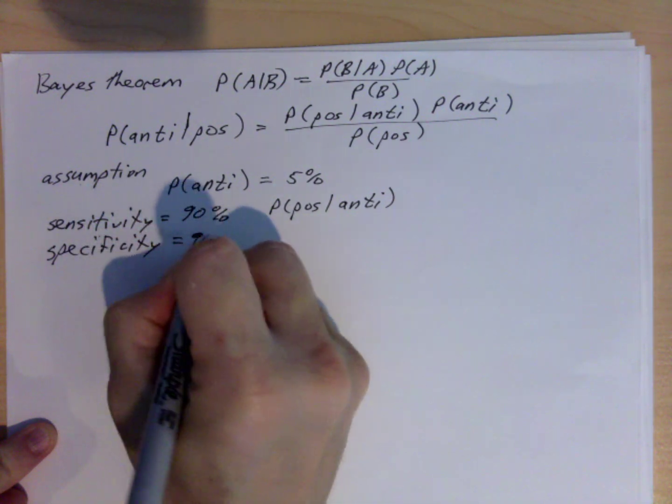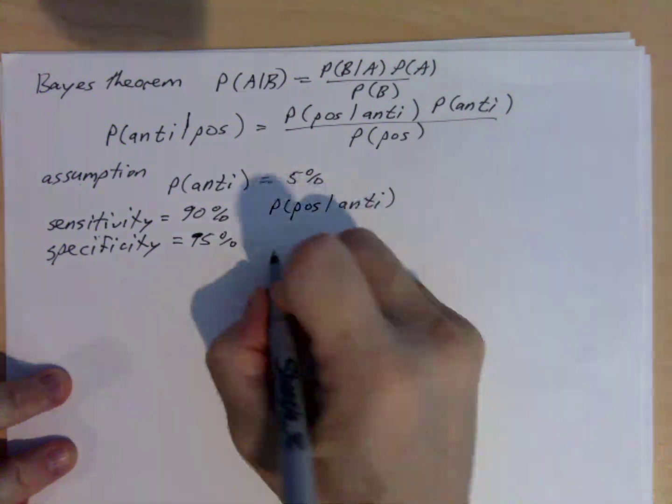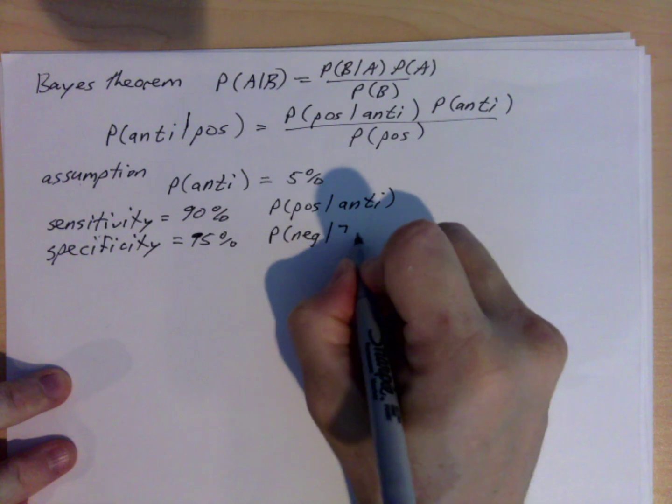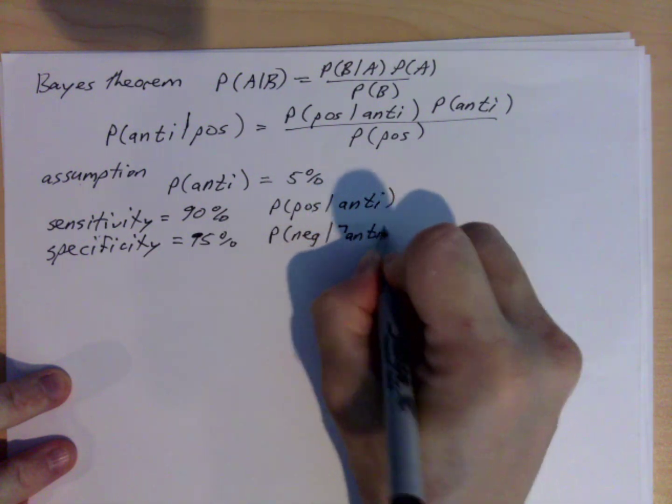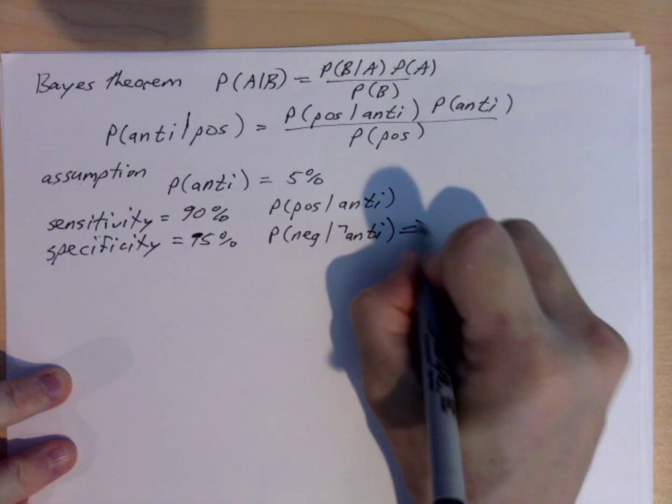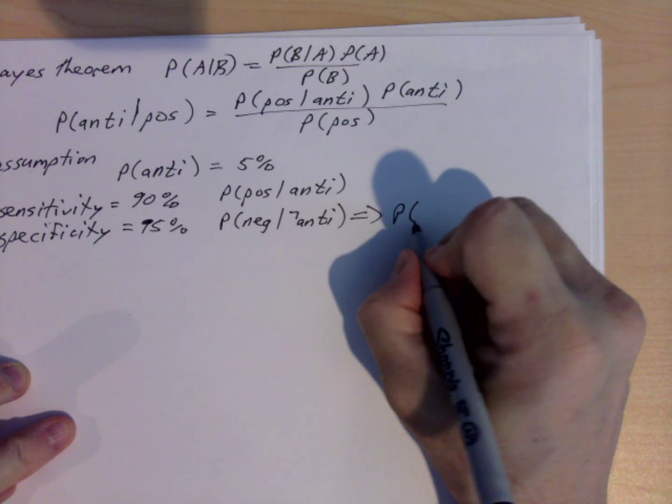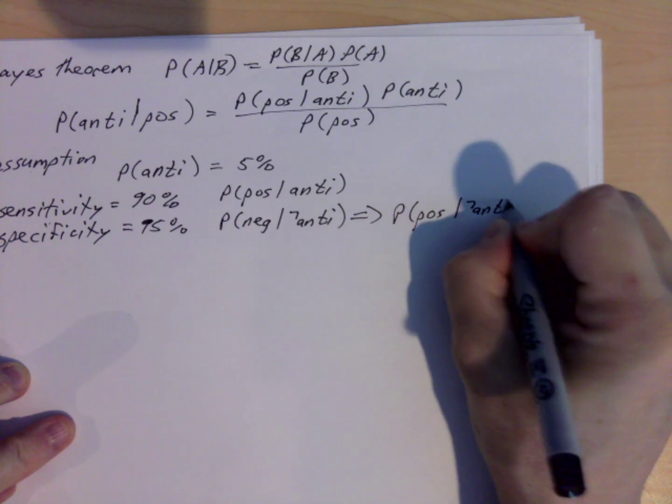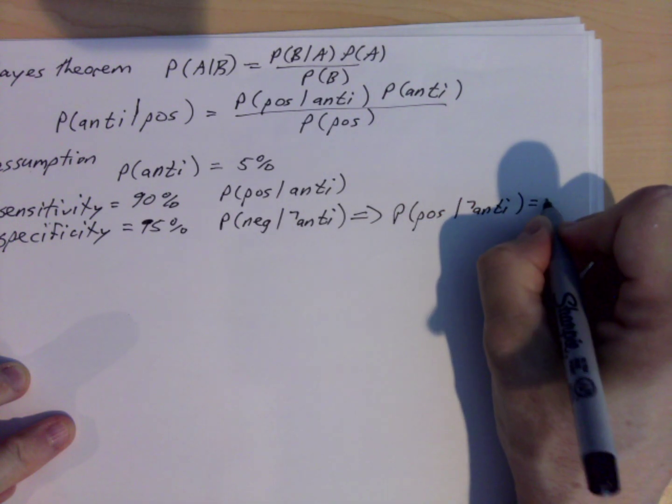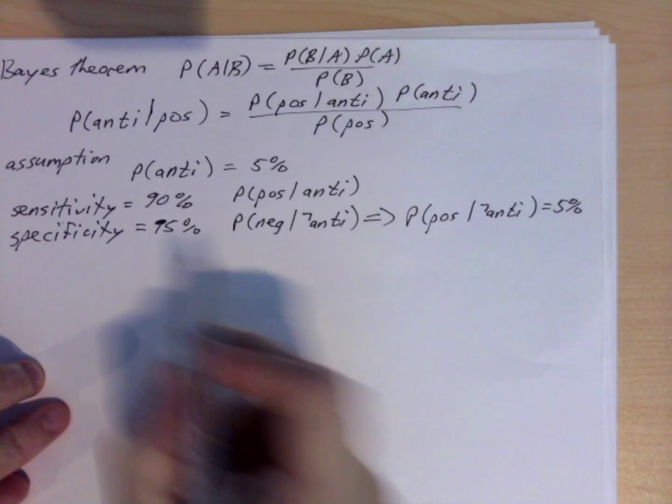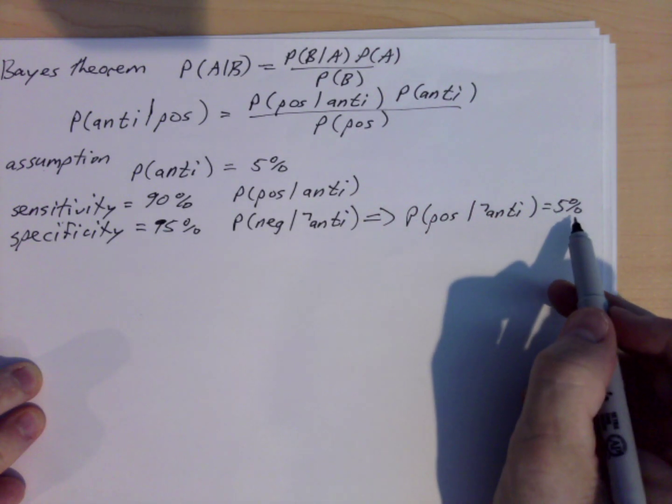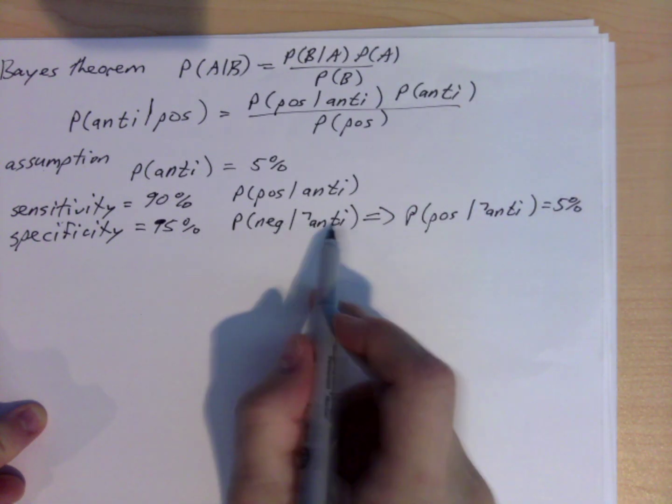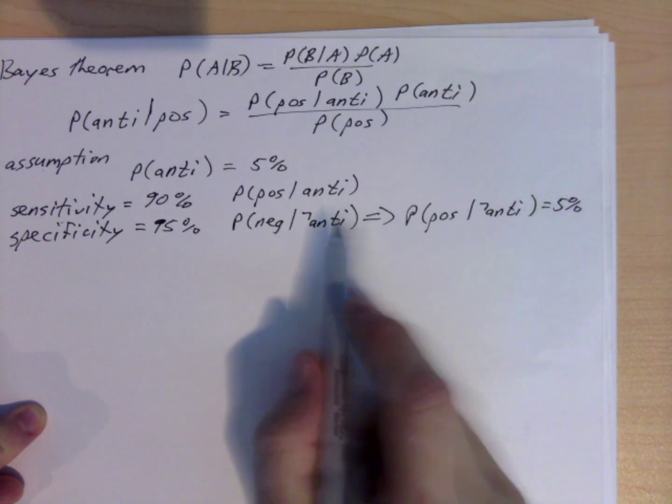And then they give the specificity, that is 95%, and that's the probability that you test negative given that you don't have antibodies, which in turn means the probability that you test positive given that you don't have antibodies is 5%, because 95% and 5% adds up to 1.